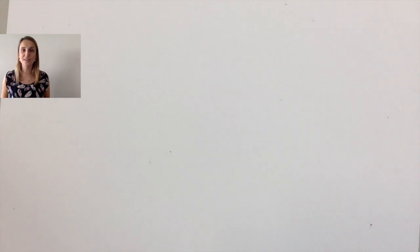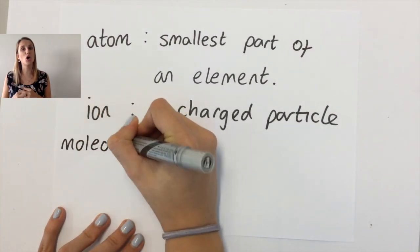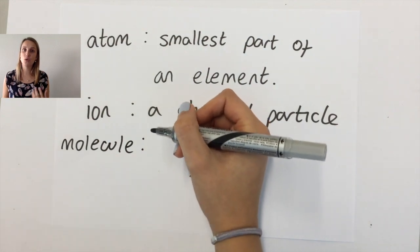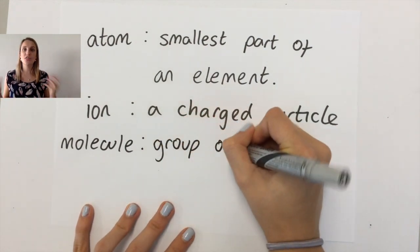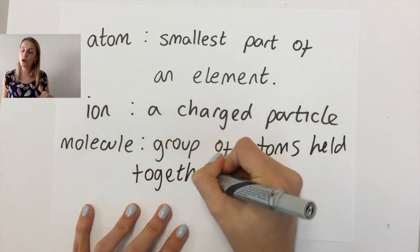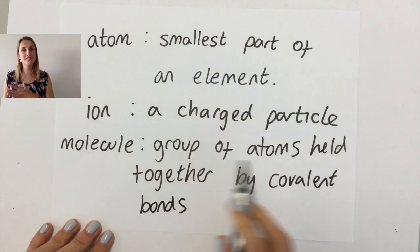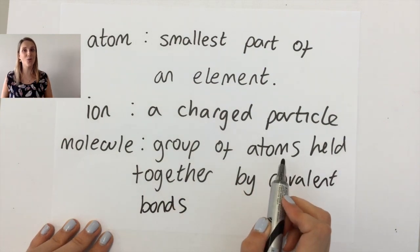The last one, a molecule, is a group of atoms that are held together with covalent bonds. What I'm looking for is more than one atom that is covalently bonded to another one. It doesn't matter whether the two atoms are of the same element or of different elements. We still call them molecules.